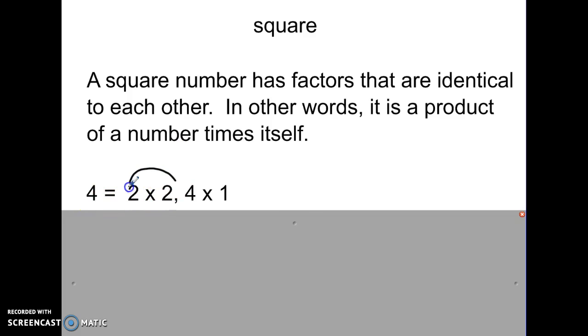So, this is the part that makes it a square number. You can see both of those factors are the same identical number, right? That gives you 4. So, 2 is not a square number. 4 is a square number because it's the product of two numbers that are the same multiplied together.